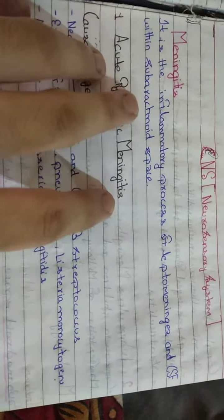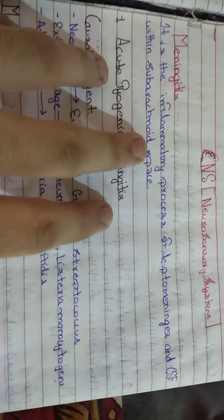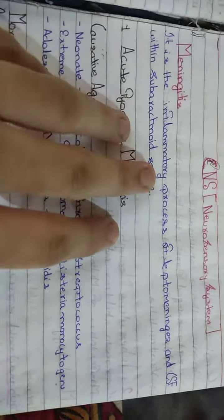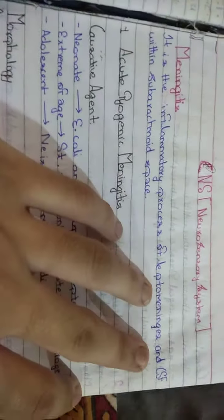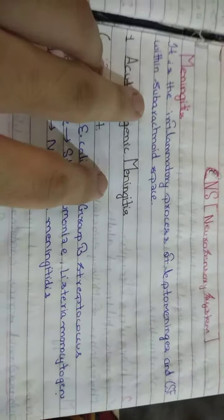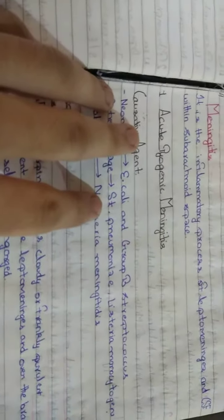Meningitis is the inflammatory process of leptomeningitis and CSF within subarachnoid space. Types of meningitis include first acute pyogenic meningitis and second tuberculous meningitis.